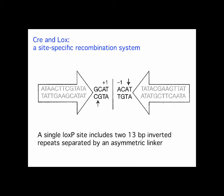CRE is the recombinase. LOX sites are the sequences that the recombinase actually binds to. These are inverted repeat sequences: on one strand 5' to 3' you have the same sequence on the opposite strand at the other end from 5' to 3'. The sequence is ATAACTTCGTA...ATAACTTCGTA — inverted repeats. These LOX sequences are the binding site for the CRE recombinase, which will come down, bind to these sites, and recombine them with other LOX sites present elsewhere.